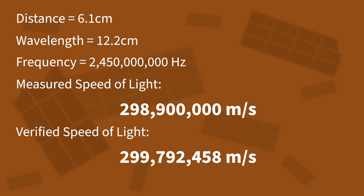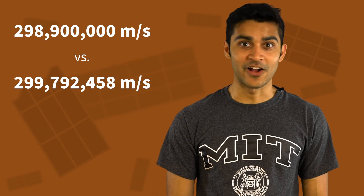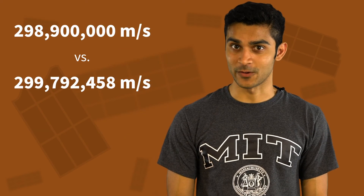And here is the speed of light scientists have measured using special equipment. Not bad for some chocolate bars and a ruler. How close can you get? Try this experiment at home. Can you find a way to measure the wavelength more precisely? Have fun with this challenge — I can't wait to see your results.